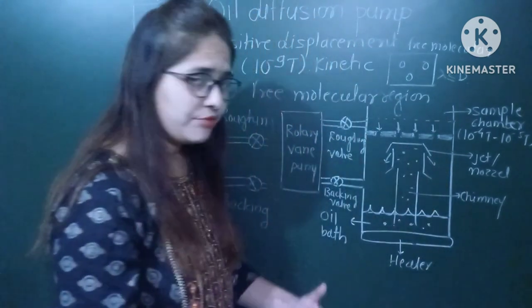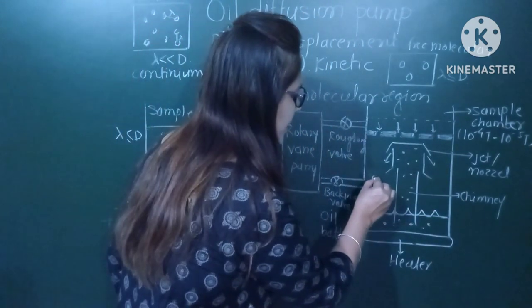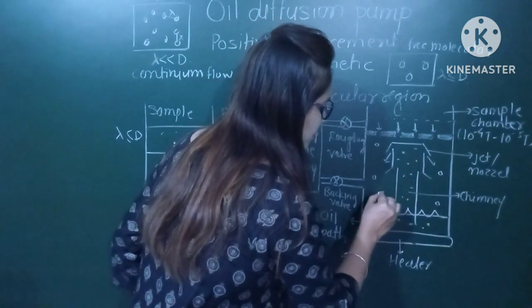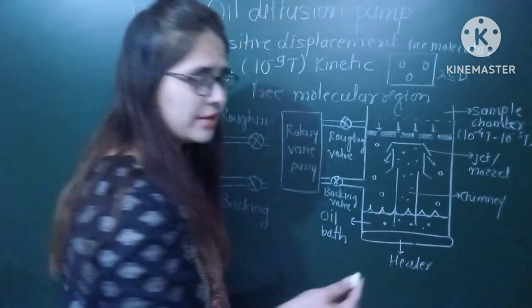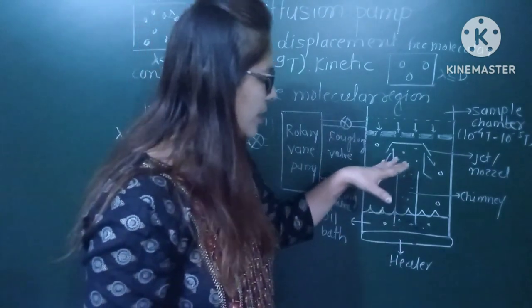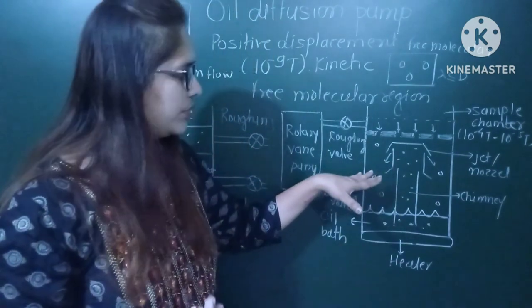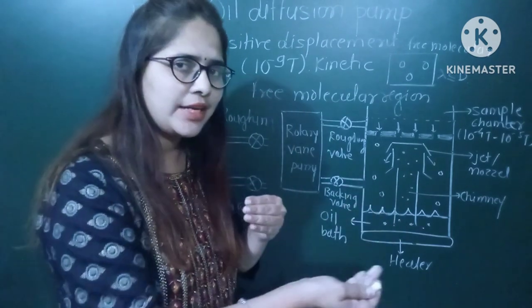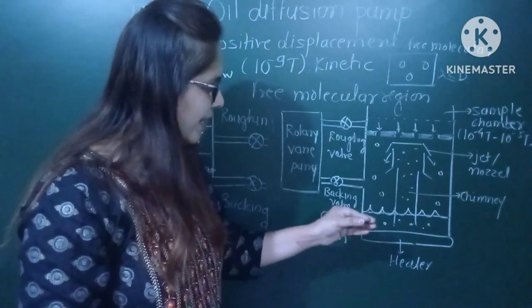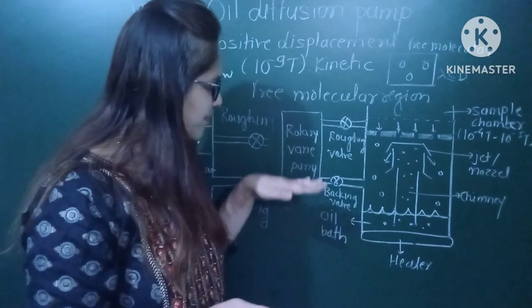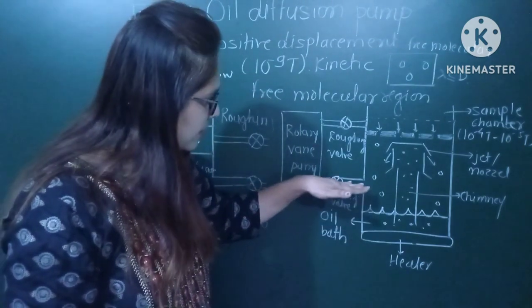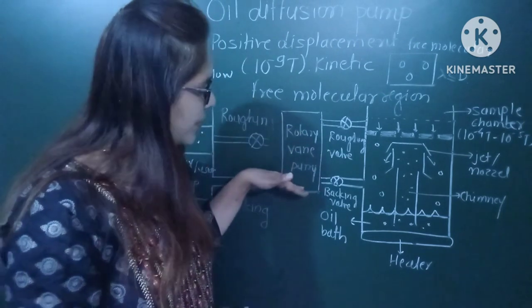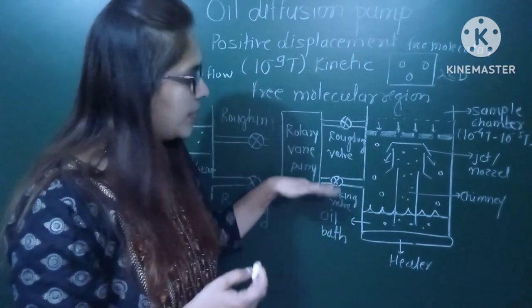There are some air molecules present, but obviously very few. The oil molecules will collide with these air molecules and impart energy to them. At this stage, we are sweeping out the air molecules through the rotary vane pump via the backing valve.